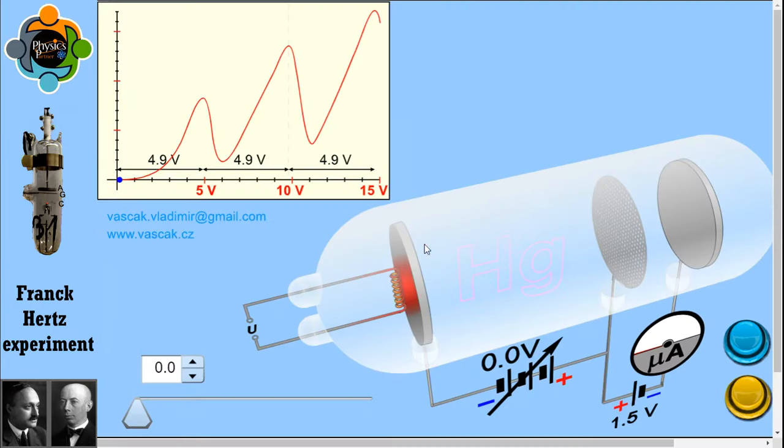Now have a look at the apparatus for this experiment. It consists of a tube containing low pressure gas fitted with three electrodes: a cathode for electron emission, a mesh grid for the acceleration of electrons, and a collecting plate.